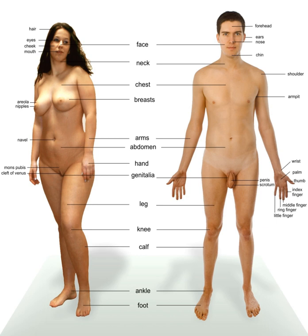Most male mammals, including male humans, have a Y chromosome, which codes for the production of larger amounts of testosterone to develop male reproductive organs.